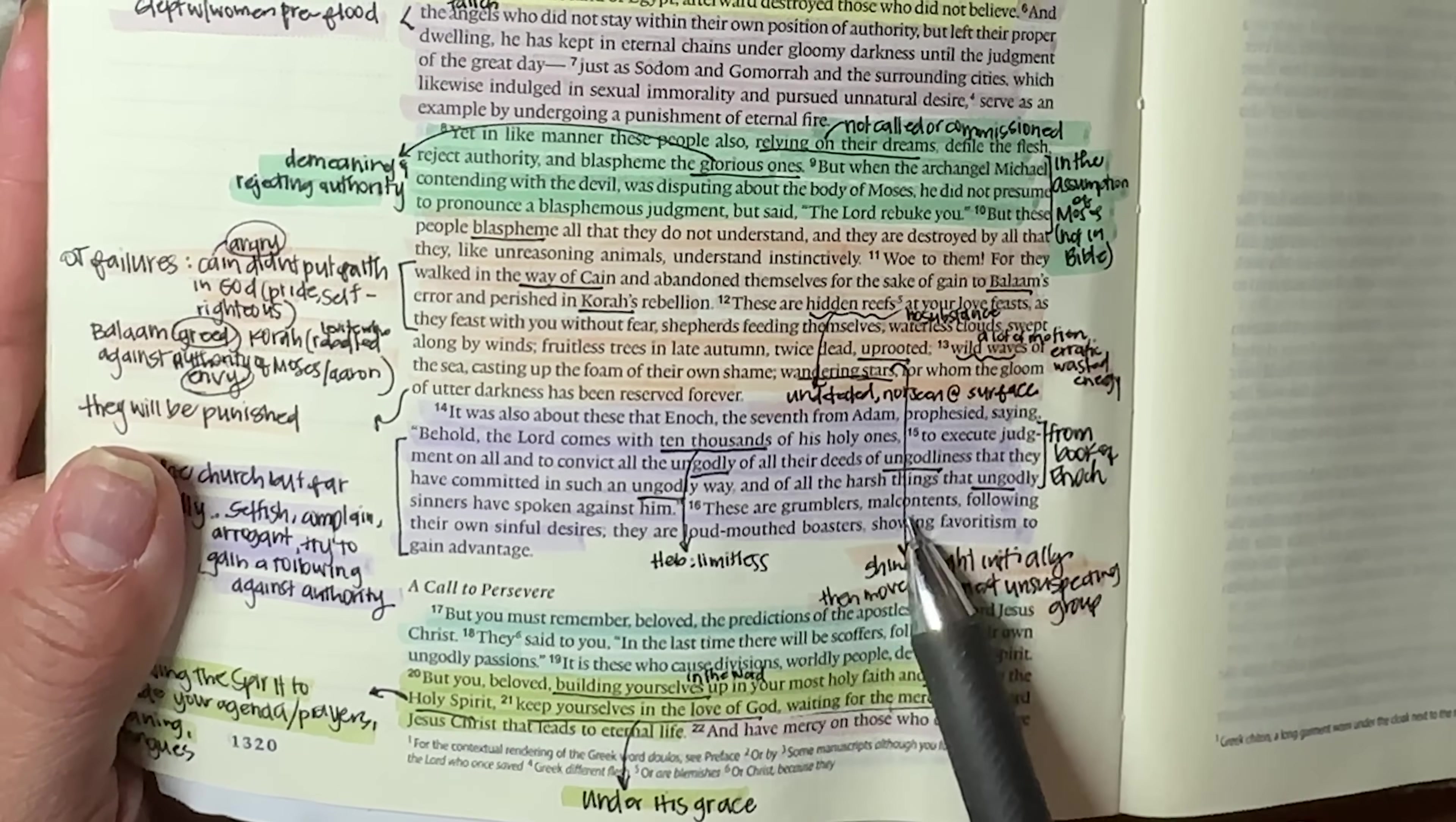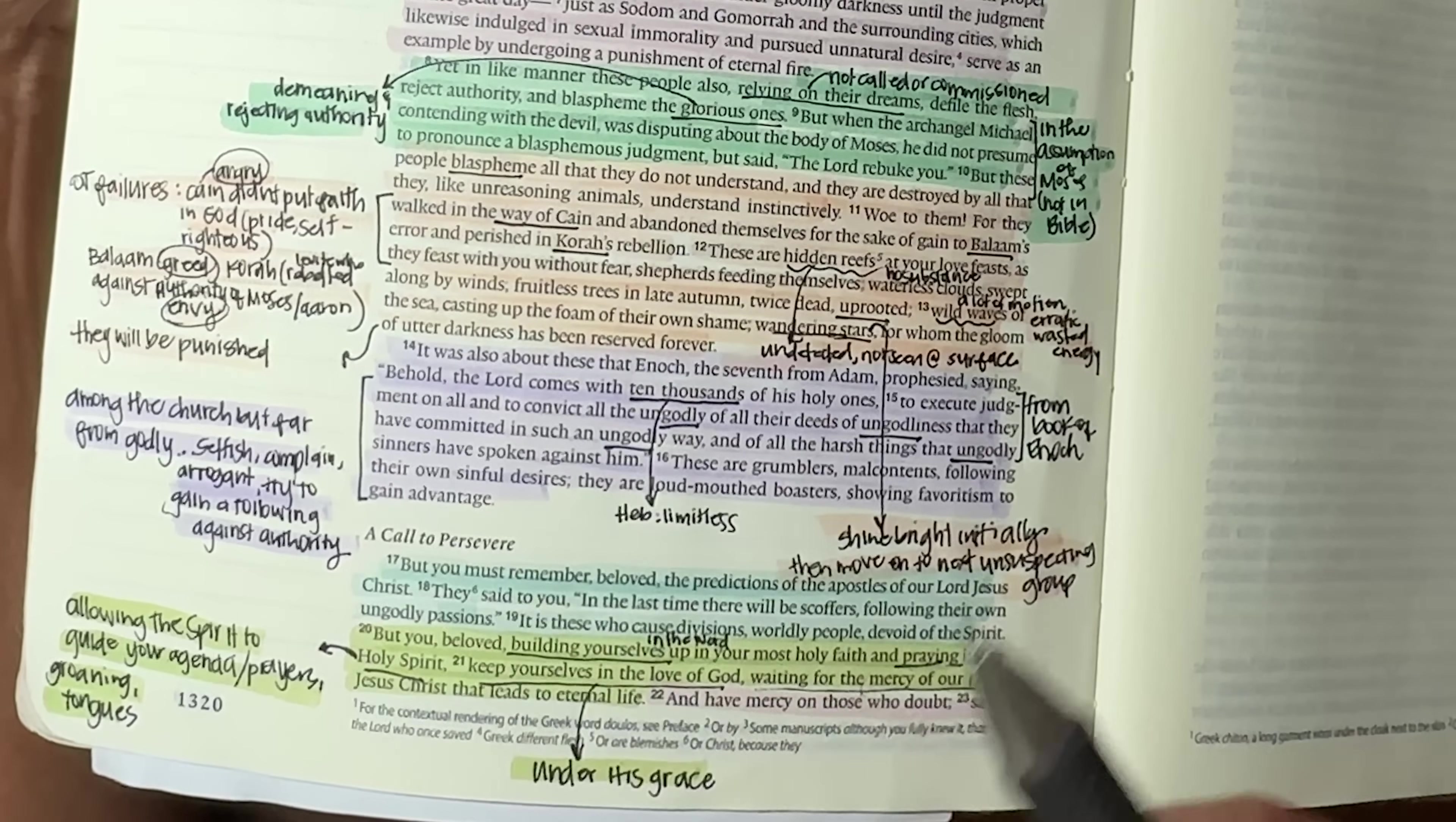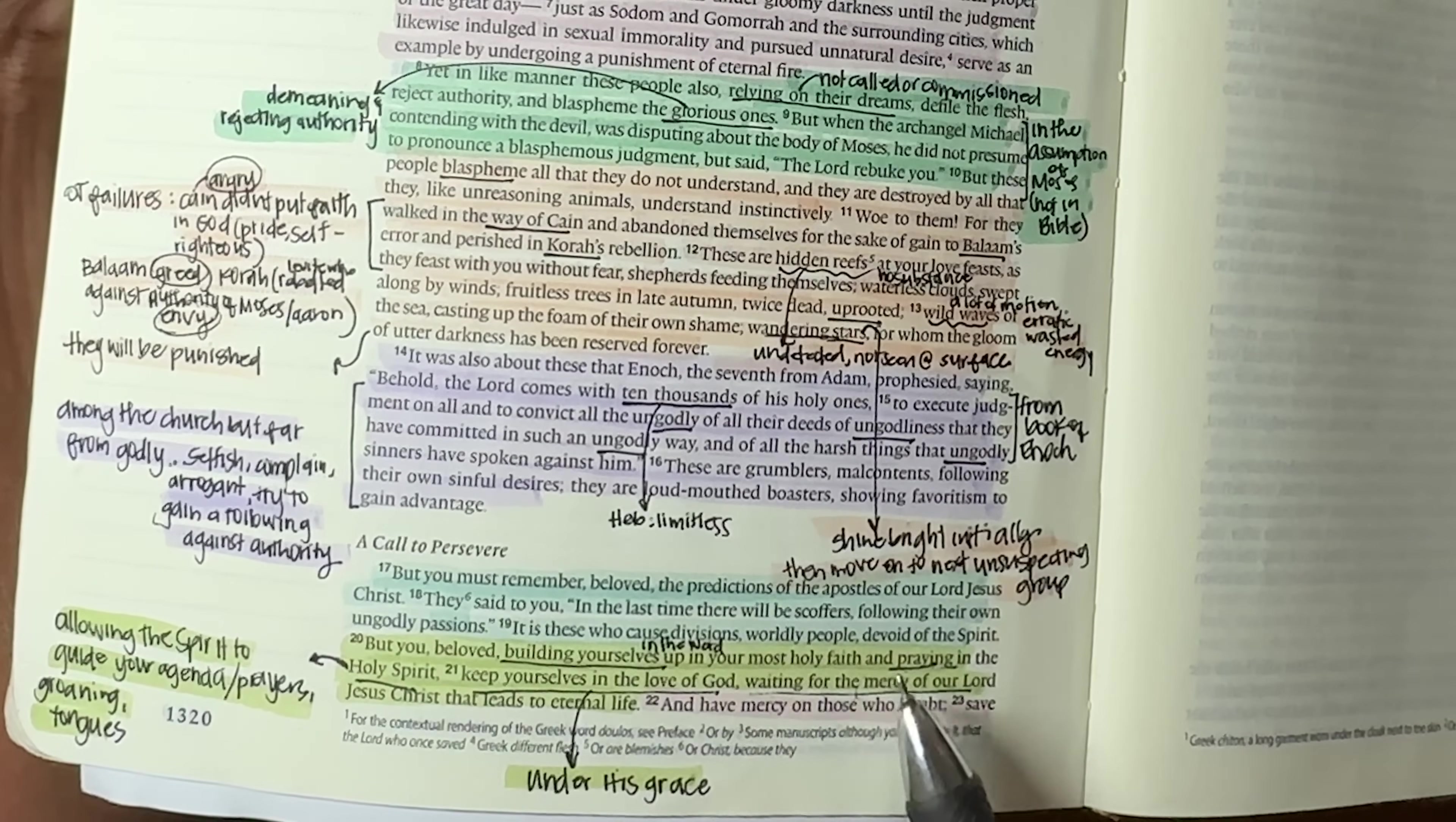So he's saying, this is what you will see. Here's how you'll know them. These are grumblers, malcontents, following their own sinful desires. They are loud mouth boasters showing favoritism to gain advantage. So they're basically selfish. They are complainers. They're arrogant. They're going to try to gain a following and they're going to be bucking up against authority. So everything is going to be for their own selfish gain. But you must remember, beloved, the predictions of the apostles of our Lord Jesus Christ. They said to you, in the last time, there will be scoffers following their own ungodly passions. It is these who cause divisions, worldly people devoid of the spirit.